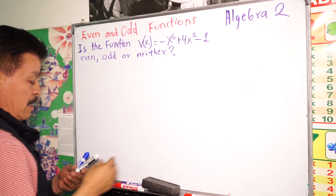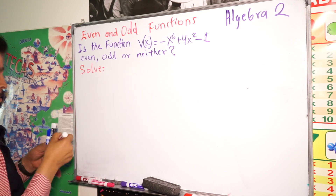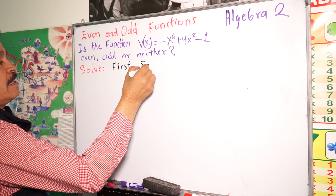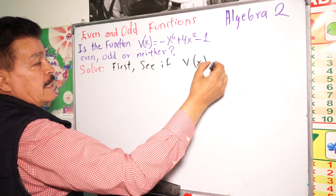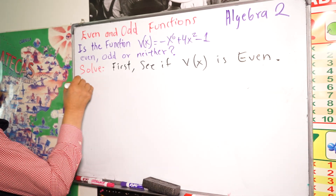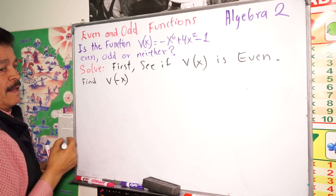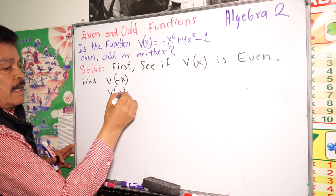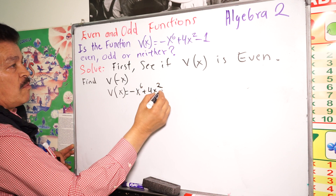So let's go and solve the problem. The first step is to find f of negative x. So f(x) equals negative x to the sixth power plus 4x to the second power minus 1.